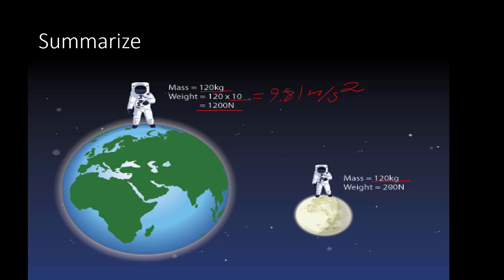Now if we look on the moon, he has the same mass of 120 kilograms, which does not change. But his weight is only 200 newtons, because the moon has a smaller gravitational acceleration and a smaller gravitational pull — because the moon is much smaller than the Earth. The larger the object, the more weight it has. Mass stays the same no matter what. The smaller the object, the less weight it has. That's why on Earth he's 1200 newtons, and on the moon that astronaut is 200 newtons.